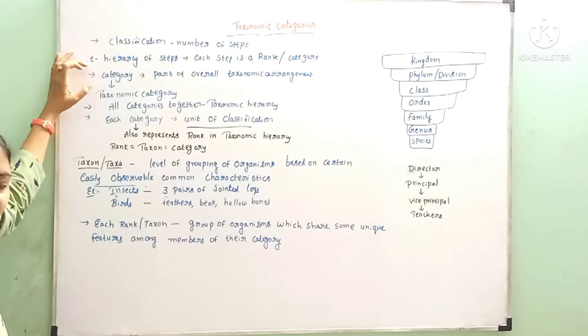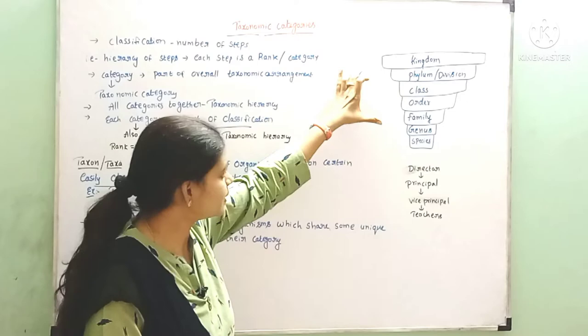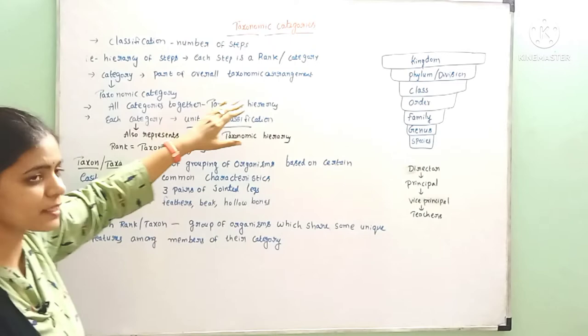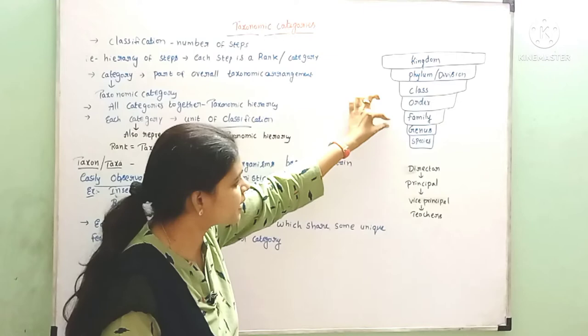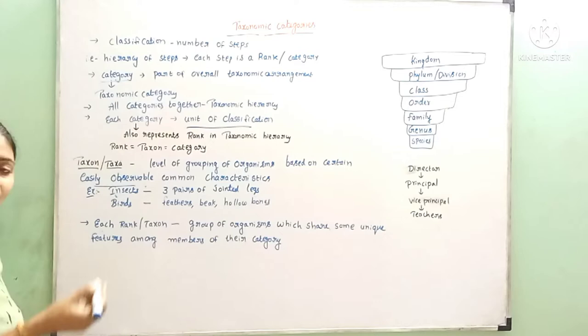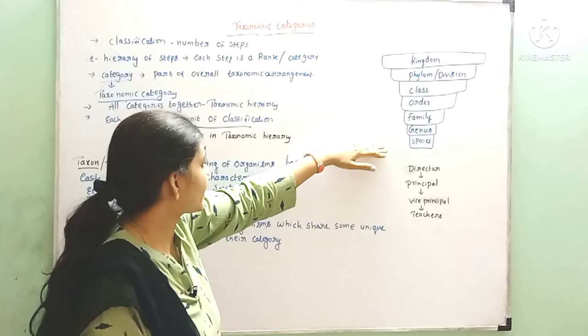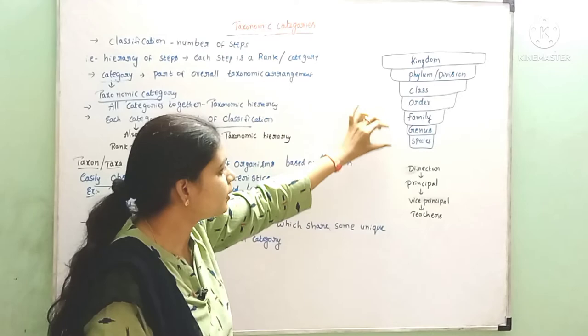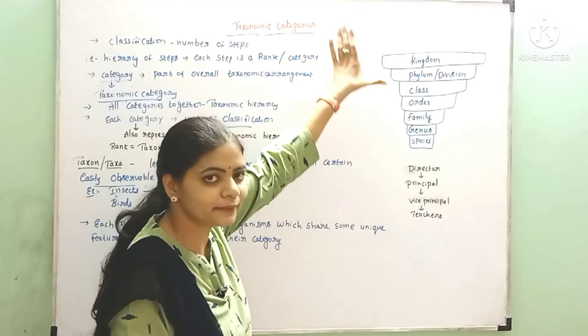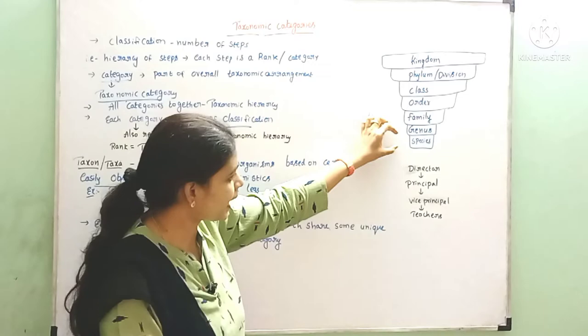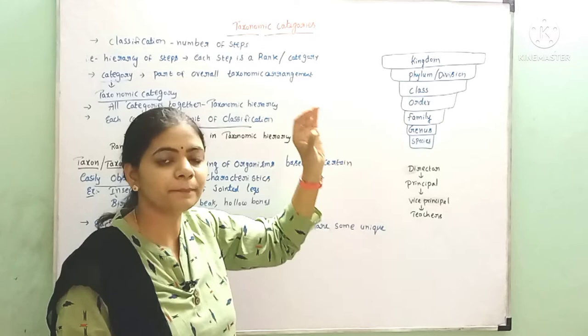In this hierarchy, each step is a rank or a category. What is meant by category? In the taxonomic hierarchy, each step is called a taxonomic category — it is part of the overall taxonomic arrangement. The category is nothing but any part of the taxonomic arrangement, also called a taxonomic category. All these categories together form the taxonomic hierarchy.